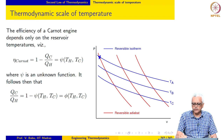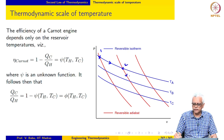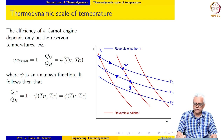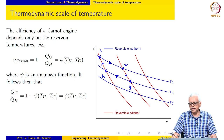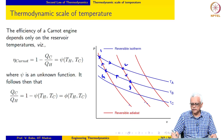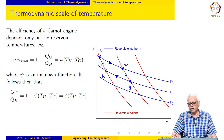For instance, a Carnot engine may start here, go along this isotherm, then proceed along an adiabat, and return — forming a Carnot cycle operating between isotherms TA and TB and two reversible adiabats.